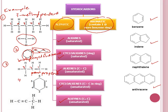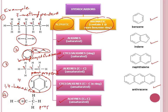The fourth example is a cycloalkene. It has two double bonds at carbon number 1 and 2, and 4 and 5. So the name would be 1,4-hexadiene. And the last one is an alkyne. Alkynes have a triple bond, and the name for this compound is propyne.